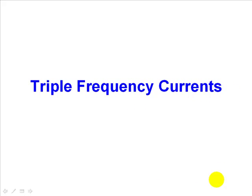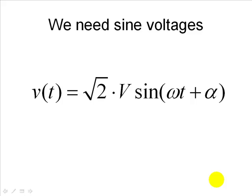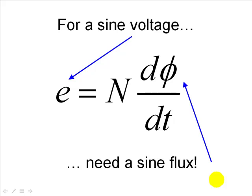Triple frequency currents in a power transformer. We want sinusoidal voltages in each one of the coils of a transformer, but that voltage will be induced in the coil by flux according to Faraday's law. That means that if the induced voltage E is to be a sinusoidal function of time, the flux needs to be also a sinusoidal function of time. But how do we create a flux that is sinusoidally changing with time?